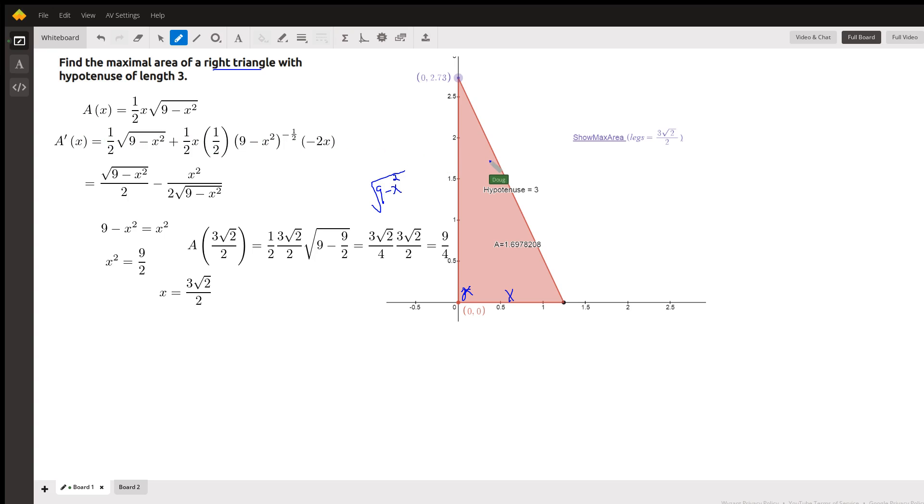So the area of that triangle for any given X is one half the base times the height. So there's our objective function.